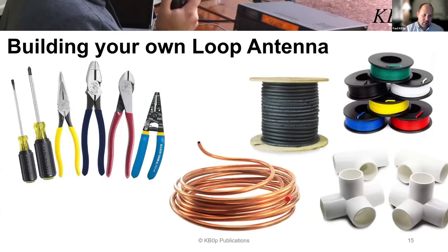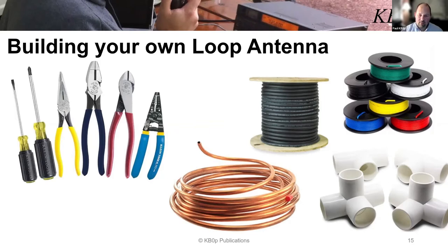We're going to talk about building our own loop antenna. What do we need? Some tools, some copper tubing, possibly wire, coax, and PVC pipe — all locally available. You can use cable TV coax, which is really cheap at hardware stores. PVC pipe is plentiful and easy to work with, and we all have wire laying around. You can actually build your own loop antenna very easily.